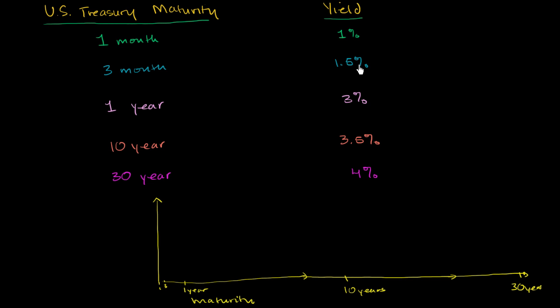And then we plot the yield for those different maturities. So in one month, you have a 1% yield. So let me do the percentages here. So this is 1%, 2%, 3%, 4%. So on one month maturity, the yield is 1%. On three month maturity, the yield is 1.5%.